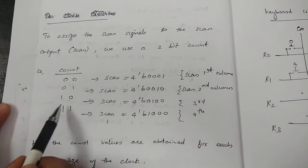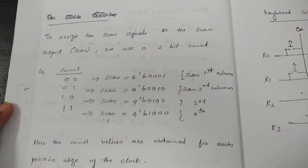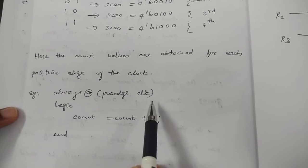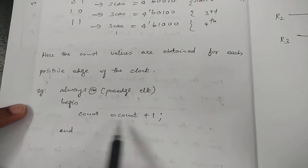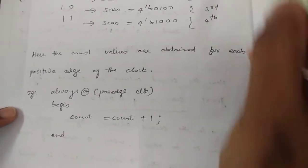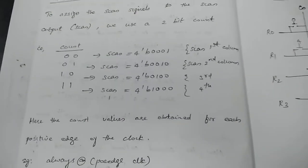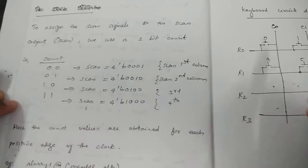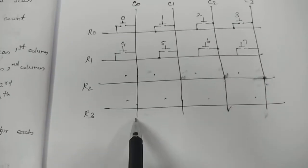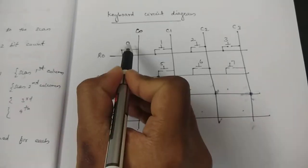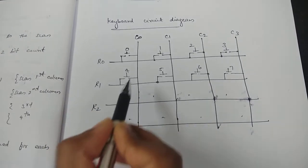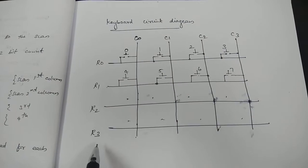The two-bit count increments at the positive edge of the clock and can take values 00, 01, 10, 11. When the count is 00 we scan the first column by asserting c0; when count is 01 we scan the second column by asserting c1; similarly for the third and fourth columns. When scan is 4'b0001, we are scanning the first column c0.